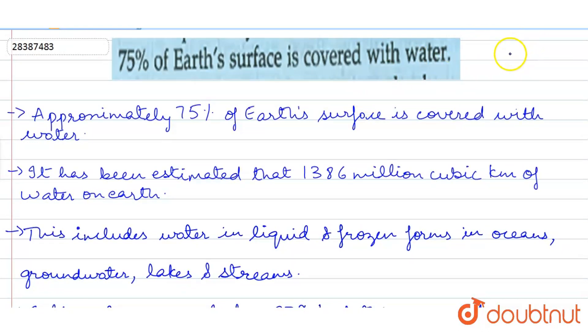So our statement that 75% of Earth's surface is covered with water is a true statement.